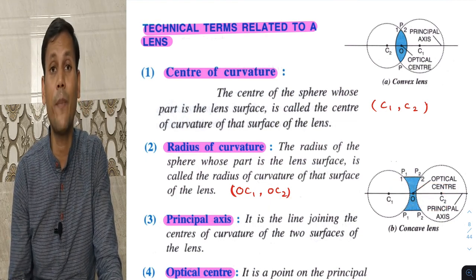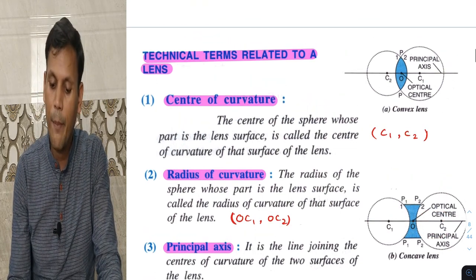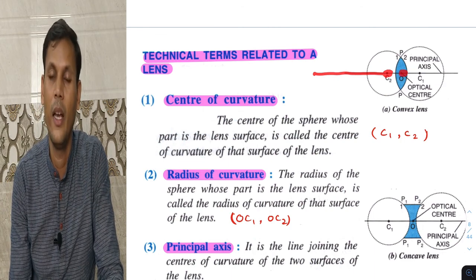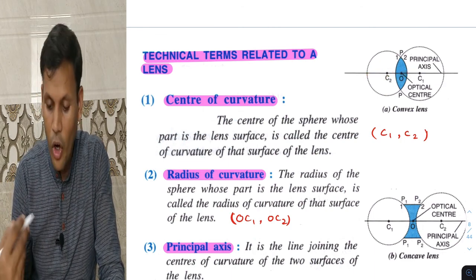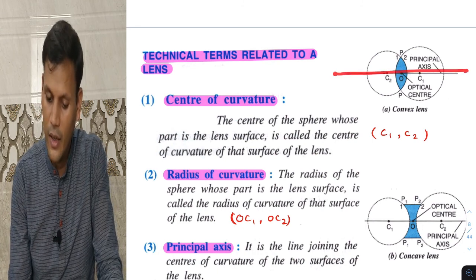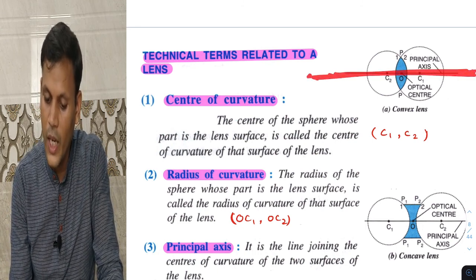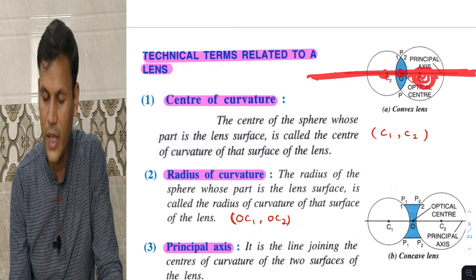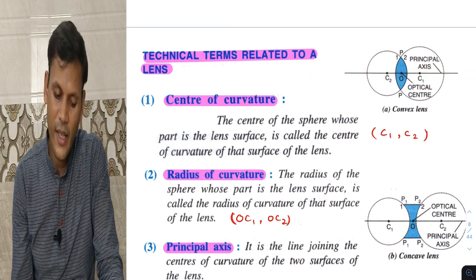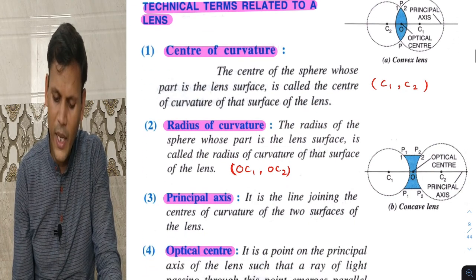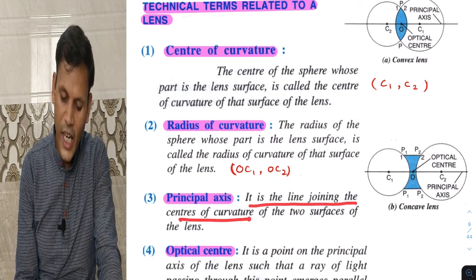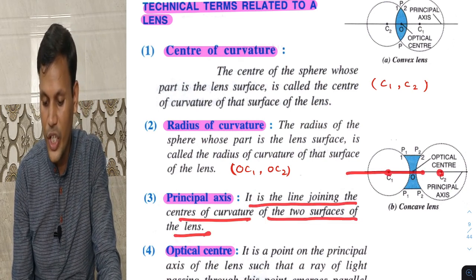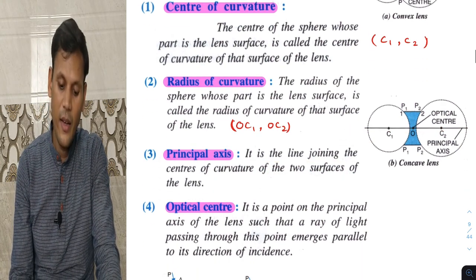Next: principal axis. The principal axis is the line joining the centers of curvature C1 and C2 of the two spheres of the lens. The line joining C1 and C2 is called the principal axis.